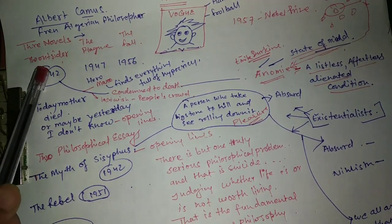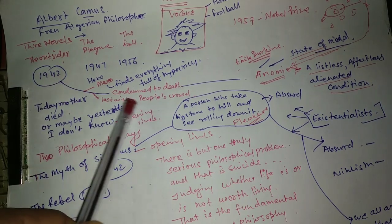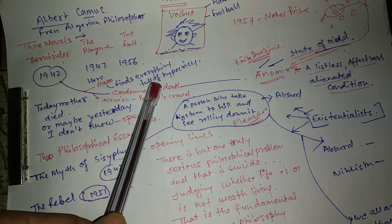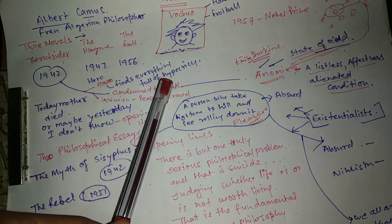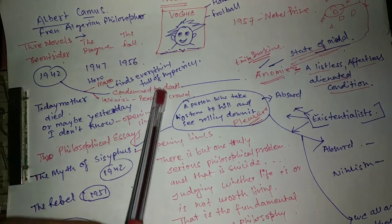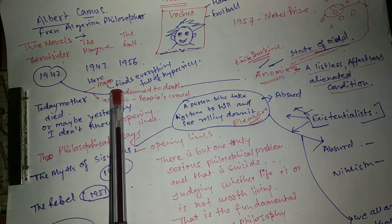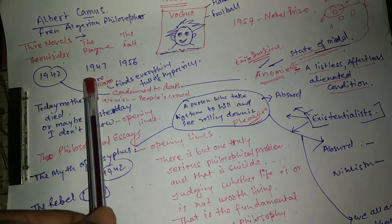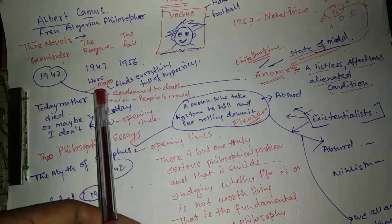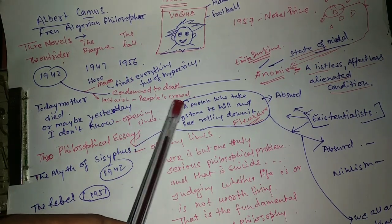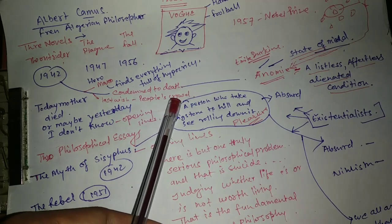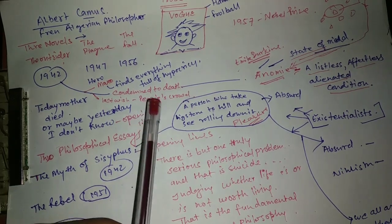The Outsider, this is a very important work in which he tried to tell his philosophy about what he thought about life. I will tell you a little story about this. Maxo is the hero. He was condemned to death and his last wish was People's Crowd. He said that people come and see me die.